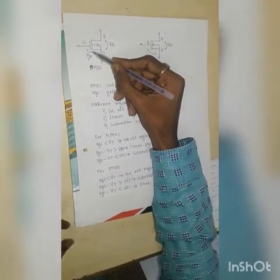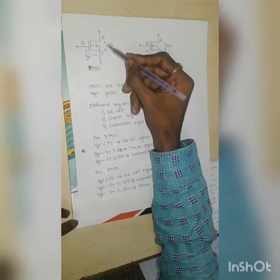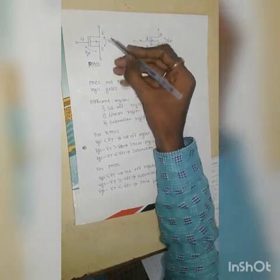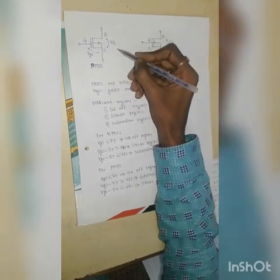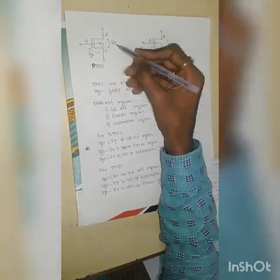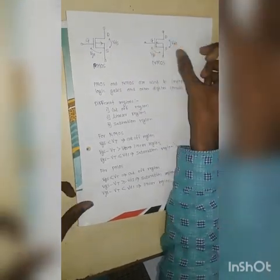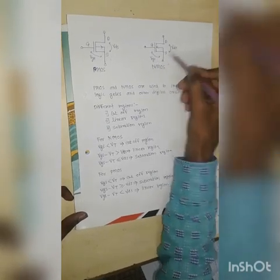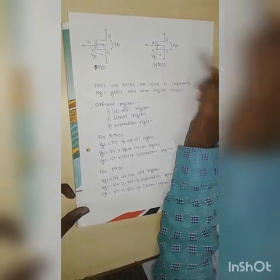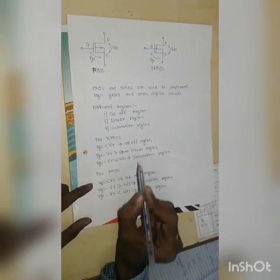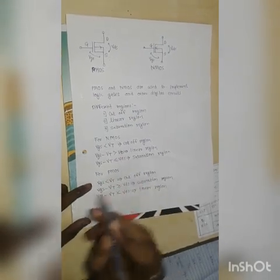For PMOS, the gate-to-source voltage is called VGS, and the drain-to-source voltage is called VDS. The same applies for NMOS — this voltage is VGS and this voltage is VDS.